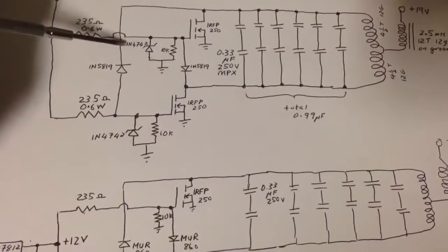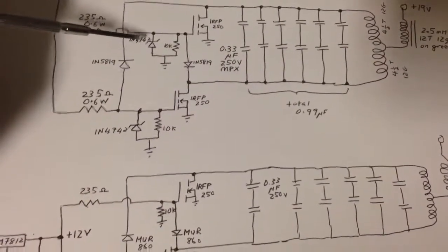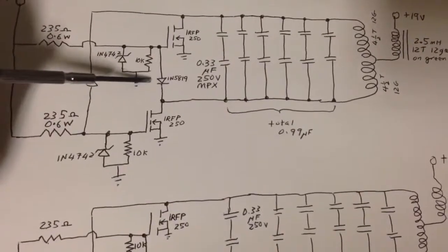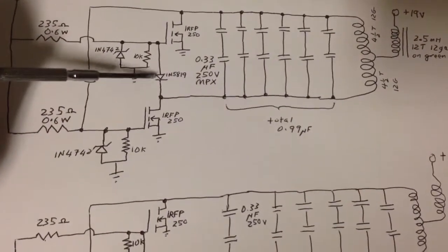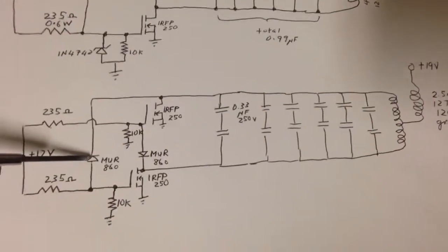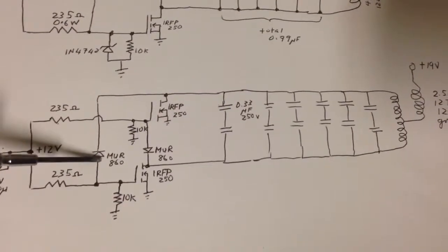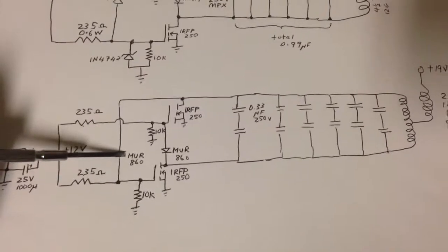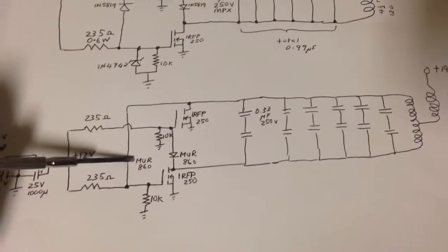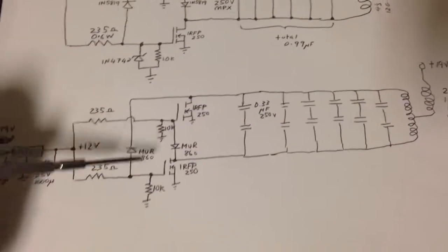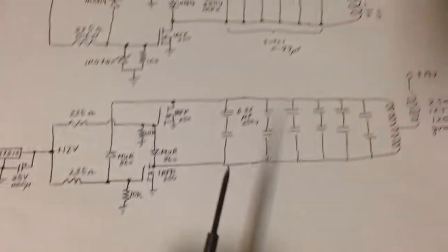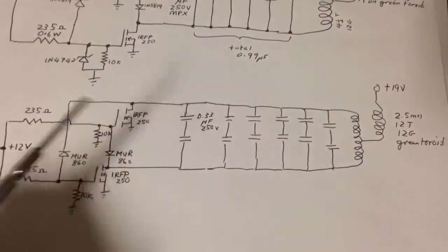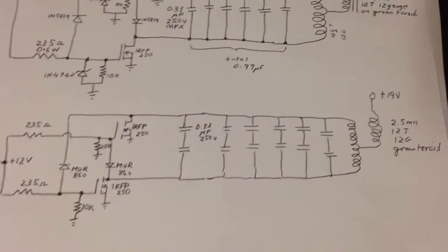That enabled me to get rid of two of the things that failed—the 1N4742s. Then I replaced the Schottky diodes, the 5819s, with these ultra fast diodes, the MUR860, which are rated for fairly high voltage and current. I think it's 10 amps or something like that and 200 or more volts. Everything else pretty much stays the same, and you can use the 0.33s as shown here or 0.47 microfarads as I mentioned.